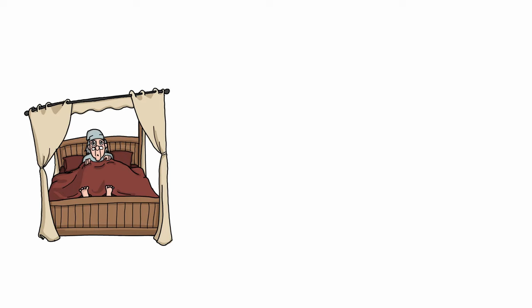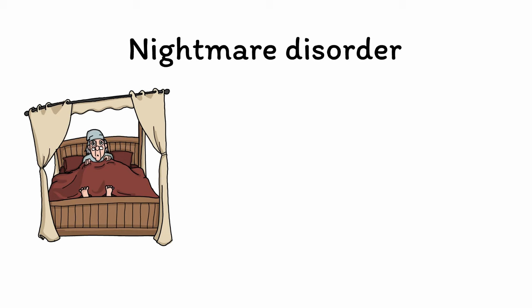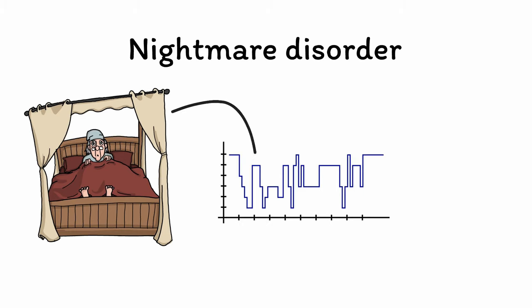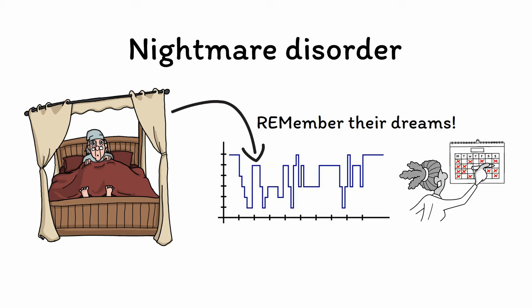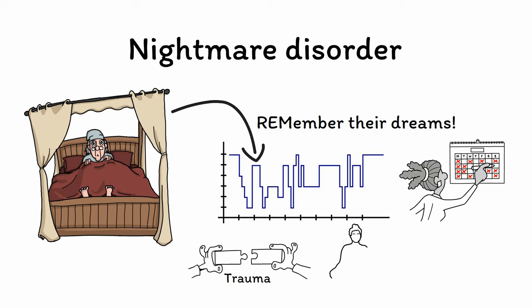The next three disorders all involve unpleasant or even terrifying experiences that occur around sleep. First is nightmare disorder, which occurs during REM sleep when people are most likely to remember their dreams. Most people have nightmares from time to time, but a minority are afflicted by nightmares frequent or severe enough to qualify as a disorder. People with nightmare disorder are more likely to have a history of trauma. If treatment is desired, stress reduction techniques such as mindfulness can help, as can the medication prazosin, which has been shown to reduce the frequency and severity of nightmares.